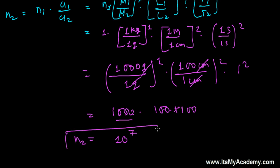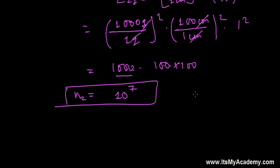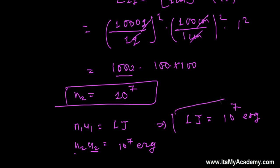So we get our n₂ as 10 to the power seven. Wow wonderful news my dear friend, our n₁ u₁ was one joule and our n₂ u₂ is now what is that? n₂ we get 10 to the power seven and u₂ was erg. So what I can say that one joule is equivalent to 10 to the power seven erg. All right and that's the solution that's the conversion we did using the dimensional equation.